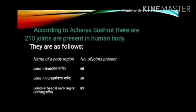According to Sushruta, there are 210 joints present in the human body. They are as follows: named joints in the limbs i.e. Gathrasandhi — 68 joints; joints in the trunk i.e. Kosthagatasandhi — 59; joints in the head and neck region i.e. Urdhvajatrasandhi — 83.